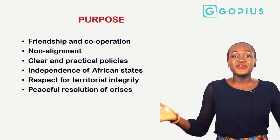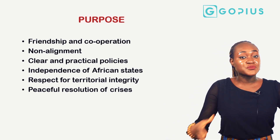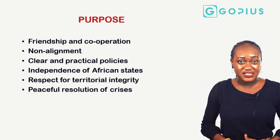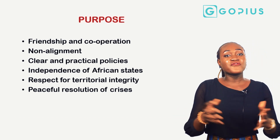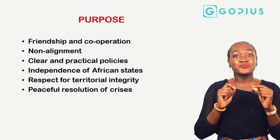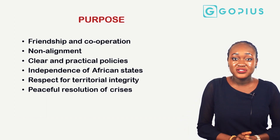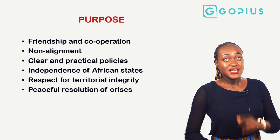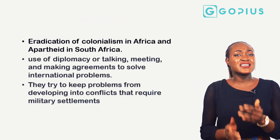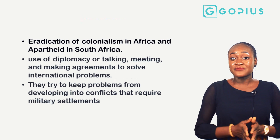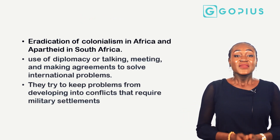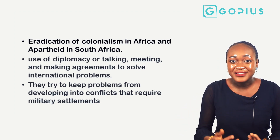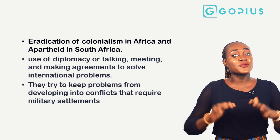Nigerian foreign policy also helped in the independence of African states — when Nigeria gained independence, it also helped other states to gain their freedom. It also embodies respect for territorial integrity and the sovereignty of other states, and it helps in the peaceful resolution of crises so situations don't escalate to war. It also helped in the eradication of colonialism in Africa and the apartheid in South Africa, using diplomacy and agreements to solve international problems.